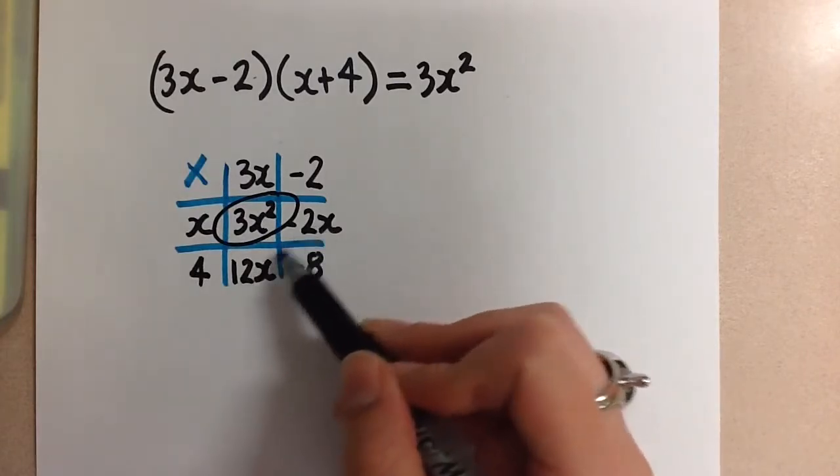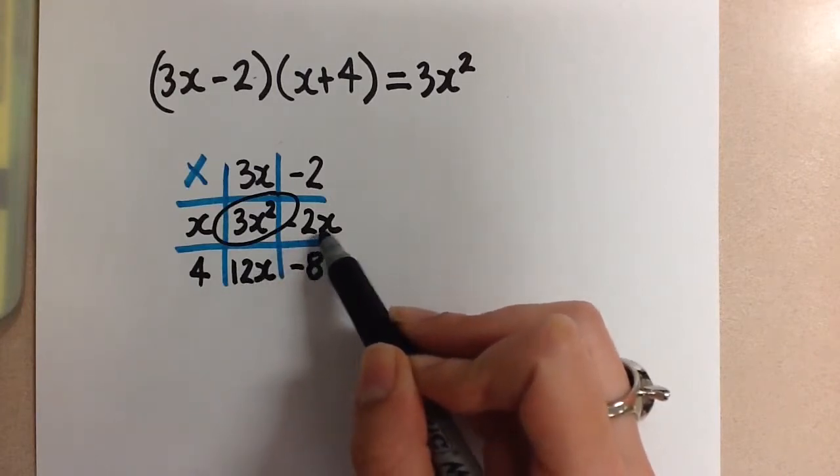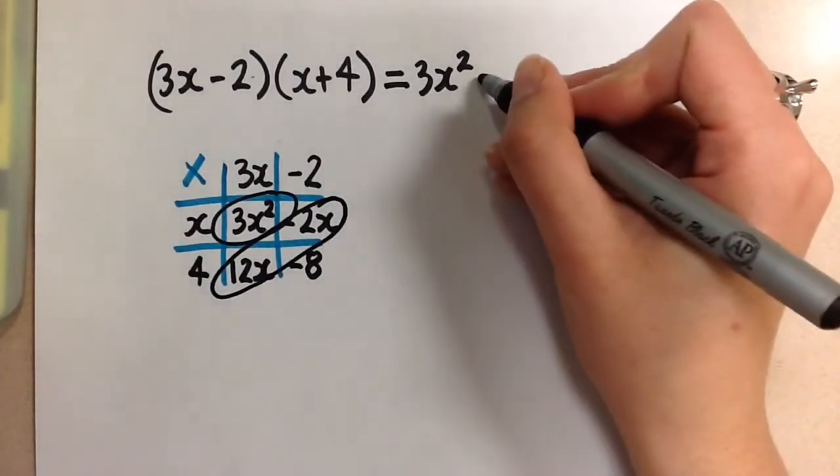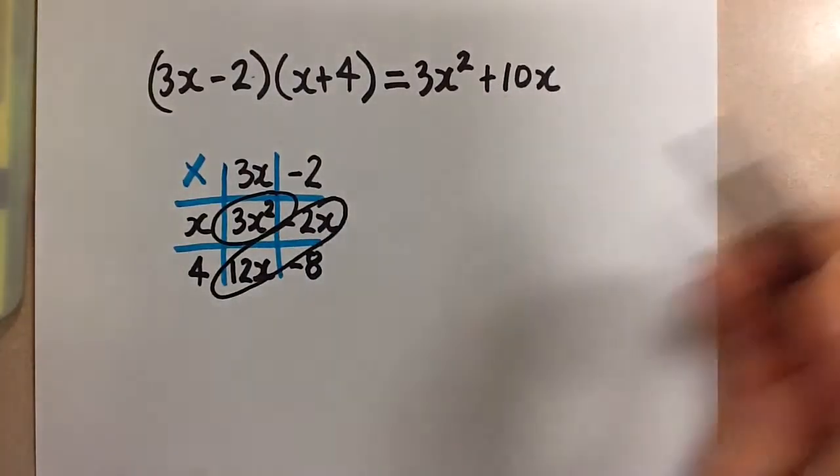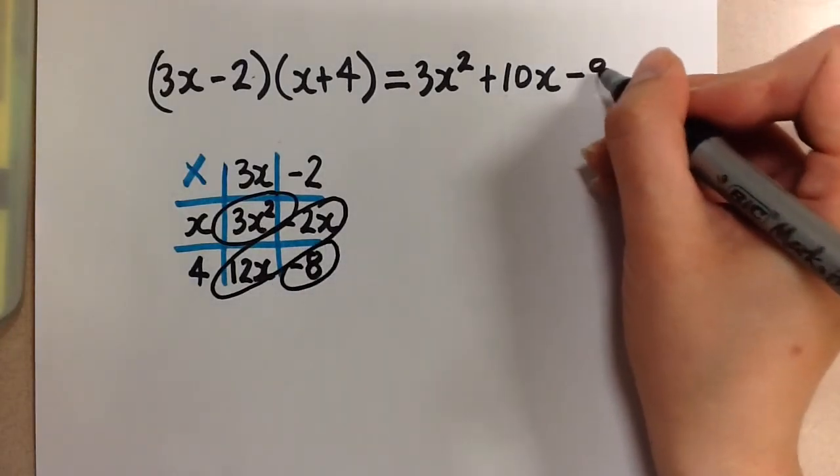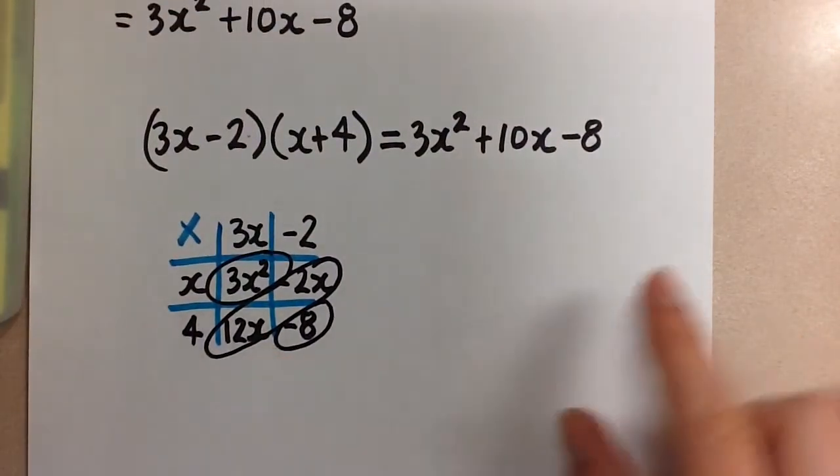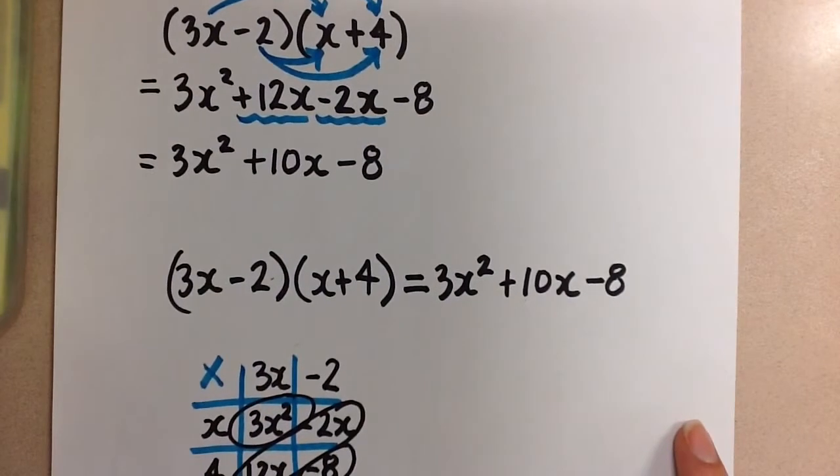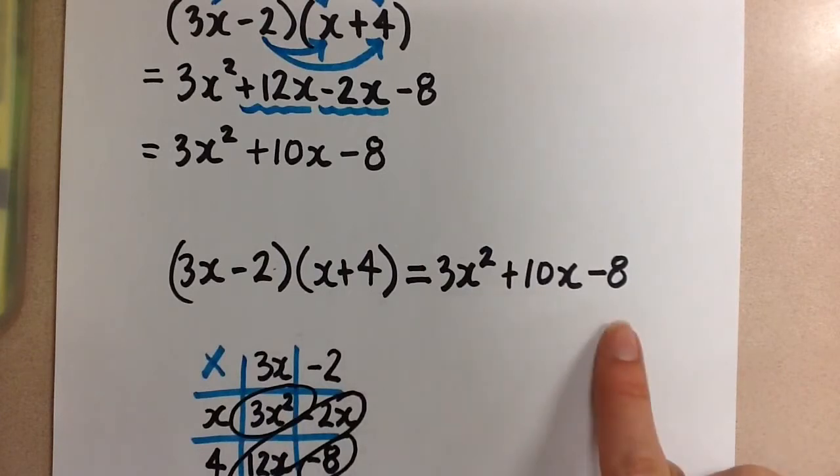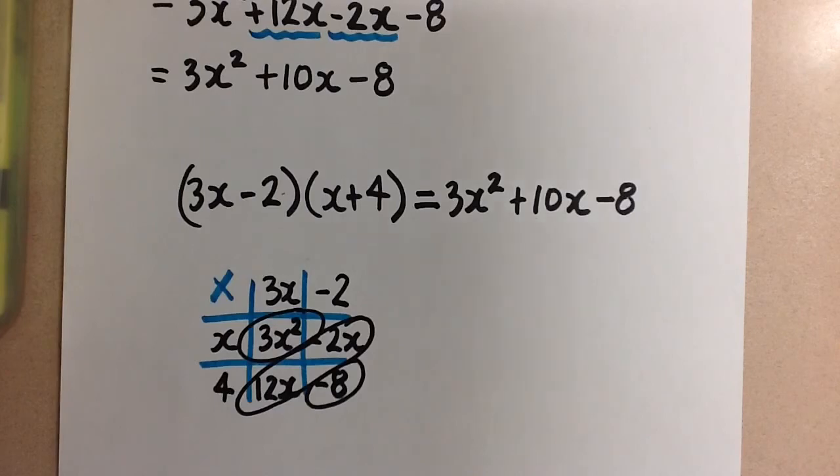But we can combine these two together, because these are like terms. So we're going to do 12x plus the negative 2x. So 12 minus 2 is positive 10x. And then lastly, we have the minus 8, which goes at the end. And so there's our final trinomial after we use the chart method for expanding. So you see that our two answers from the first method and from the second method are both the same. Thanks for visiting. Mrs. A loves math. Thank you.